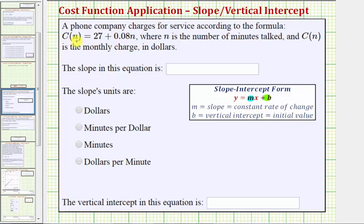In our case, because we have C of n, a function of n, the slope is going to be equal to the coefficient of n, not the coefficient of x. So notice here the slope m is equal to 0.08, and b, the constant term, is equal to 27.